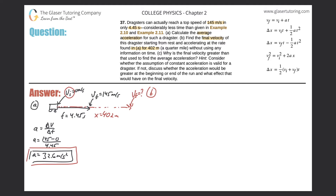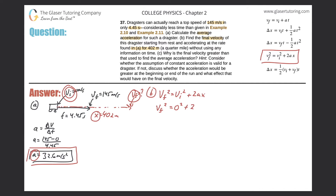We need an equation relating acceleration, displacement, final velocity, and initial velocity — with no time variable. Equation four fits: v_f² = v_i² + 2aΔx. The final velocity is what we're solving for; initial velocity is zero. So it becomes: v_f² = 2 × 32.6 × 402.